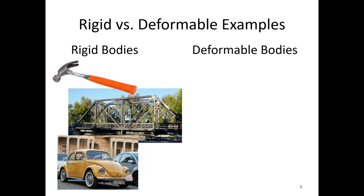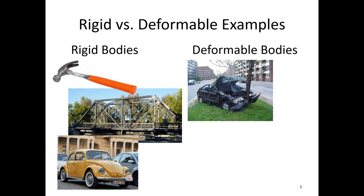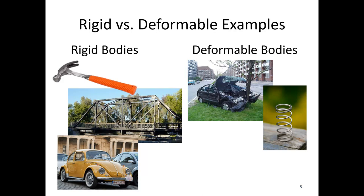Now for things we would not assume are rigid — things we treat as deformable. A car in a car crash: there is definitely a lot of deformation going on. If I'm doing a safety evaluation, I cannot model the car as a rigid body — it is going to be deforming. We also have things that intentionally deform, like a spring in a system, which is a deformable body — that's usually the whole point of having the spring there.